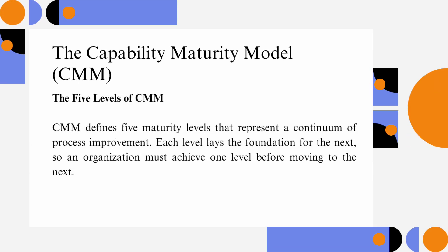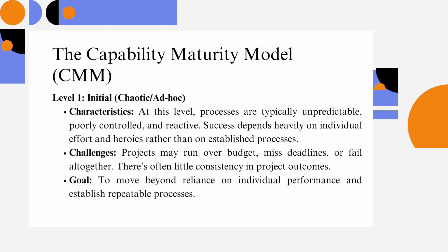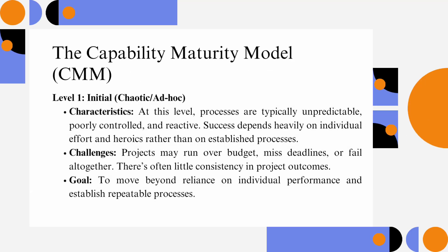The Five Levels of CMM: CMM defines five maturity levels that represent a continuum of process improvement. Each level lays the foundation for the next, so an organization must achieve one level before moving to the next. Level 1 – Initial – Chaotic/Ad-Hoc.